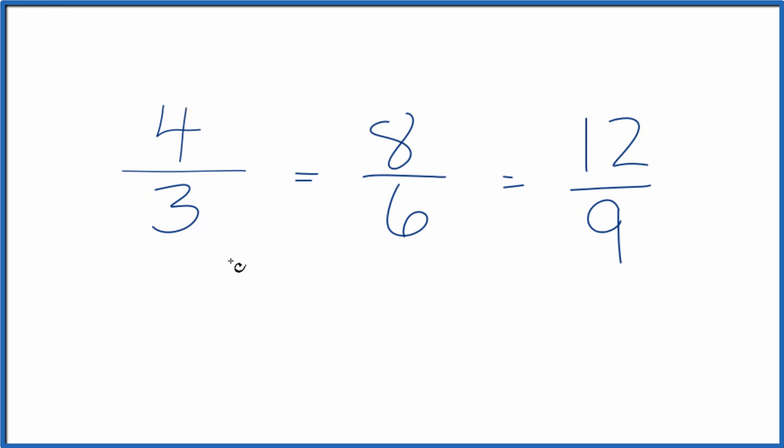We could also convert 4 thirds to a mixed number. Right now it's an improper fraction. 4 is larger than 3. The numerator is larger than the denominator.